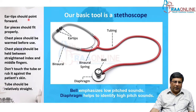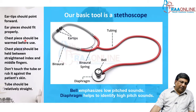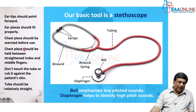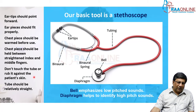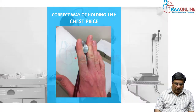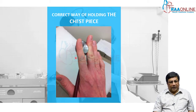The ear tips should point forward and fit properly. Always warm the chest piece before use, because a cold chest piece may produce significant discomfort — especially in children, as it may wake the child and cause them to start crying. The chest piece should be held between the straightened index finger and middle finger. Don't touch the tube or let it rub the patient's chest, as this produces noise artifacts; the tube should be kept relatively straight and not bent while auscultating.